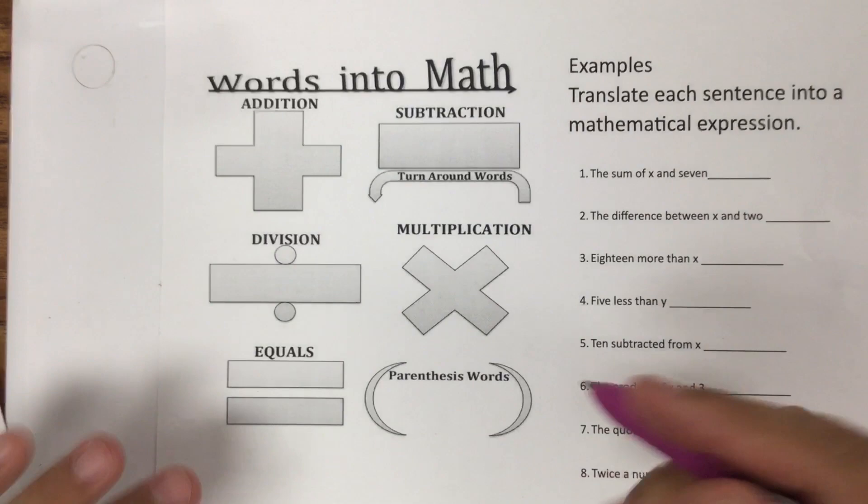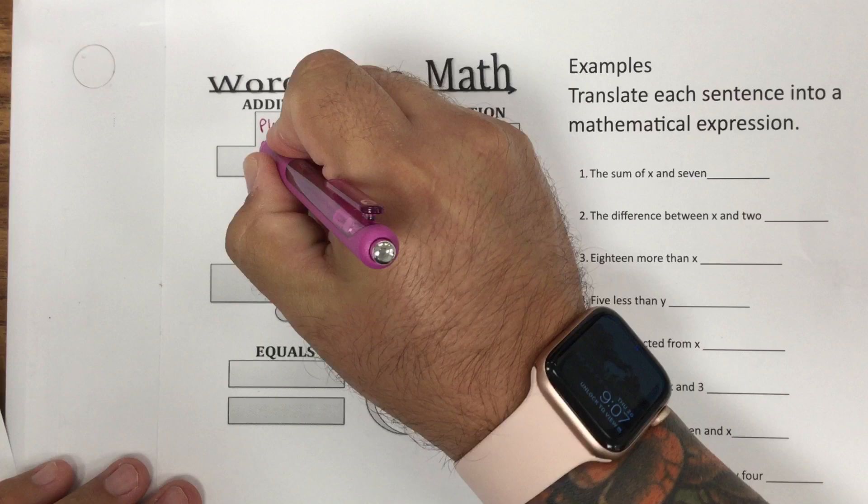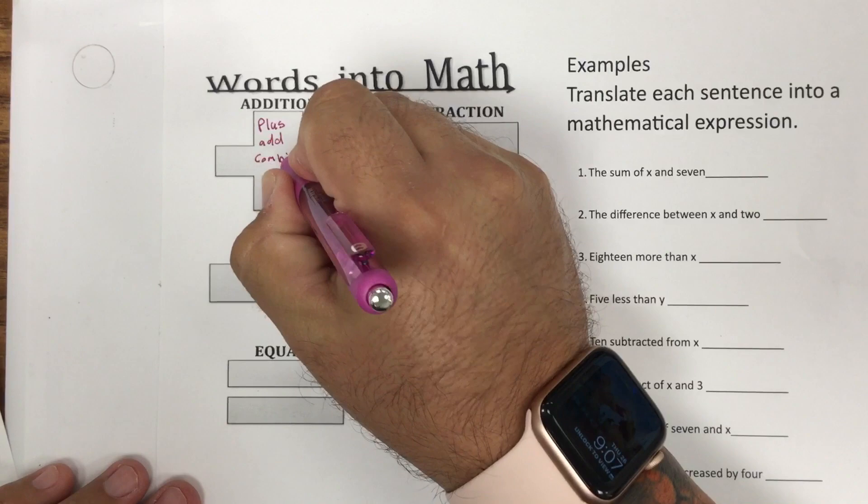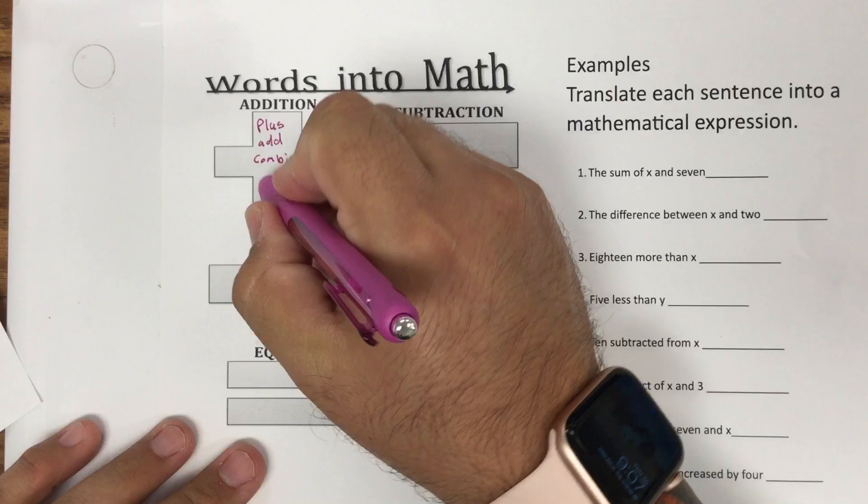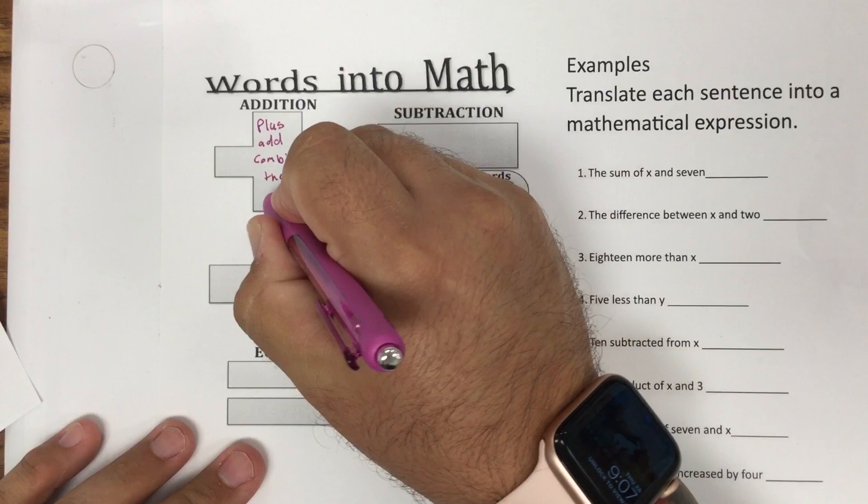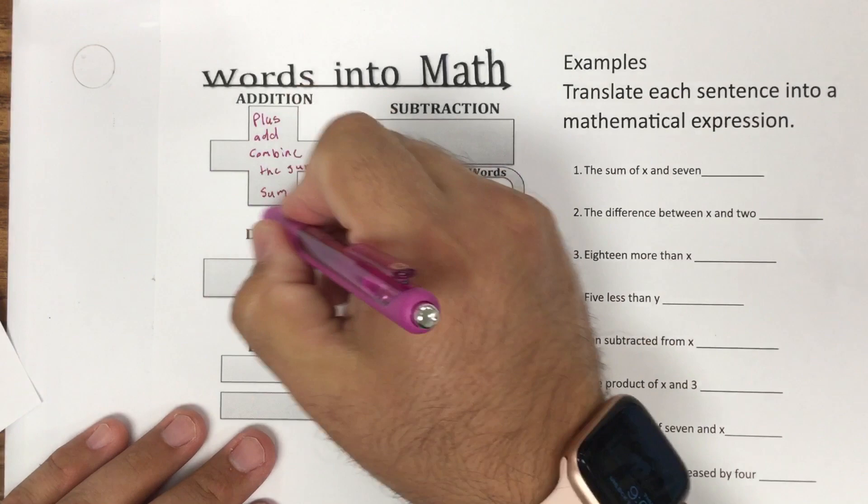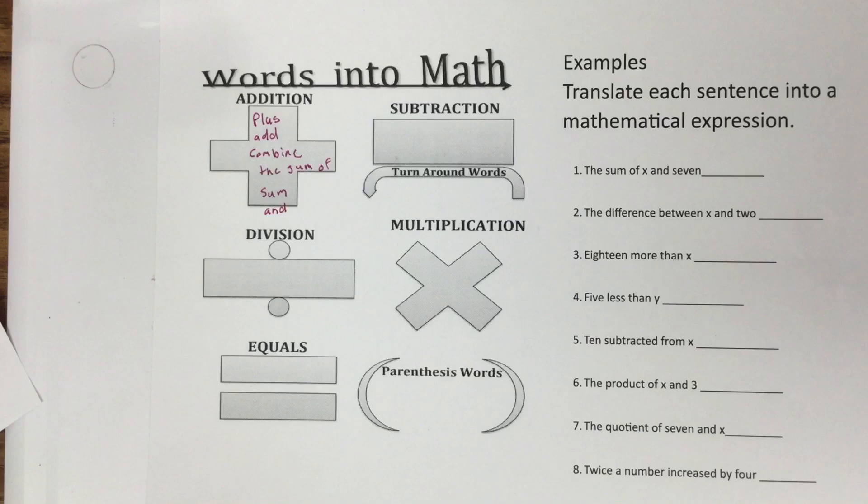When I think of the word addition, some of the words that come to mind are plus, maybe add, combine. Now combine can be a little bit of a tricky word, but that's one that's there for sure. You might even hear the sum of, or even sum. If you say sum of two and six, you might even see the word and - two and three.